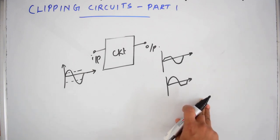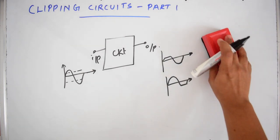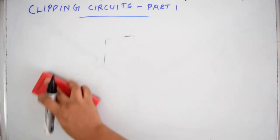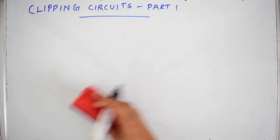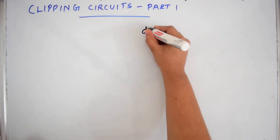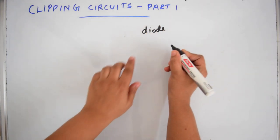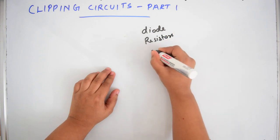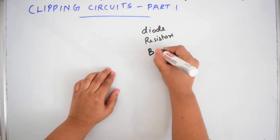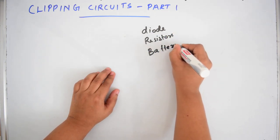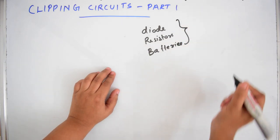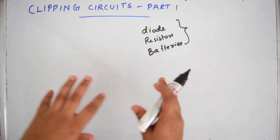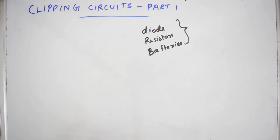Let's see what elements come in a clipping circuit. For performing this function, we need a diode. Resistors will also be used, and batteries will also be used. Different combinations of these will perform clipping in different ways.